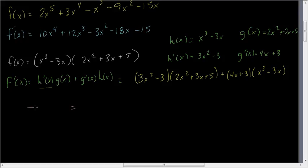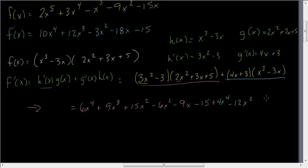Alright? So here I go. This equals, and now this is going to be 6x to the fourth. And so that's 6x to the fourth. Then we have 9x cubed plus 9x cubed plus 15x squared minus 6x squared minus 9x minus 15 plus. And that was just the expansion of the first chunk here. So I'm going to change up the colors. Now the second chunk is in blue. And so we've got 4x to the fourth minus 12x squared plus 3x to the third minus 9x.